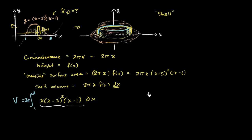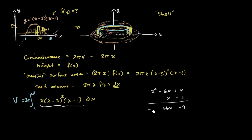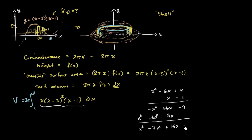So (x - 3)² is x² - 6x + 9. And we're going to multiply that times (x - 1). Negative 1 times 9 is -9; negative 1 times -6x is +6x; negative 1 times x² is -x². Then x times 9 is 9x; x times -6x is -6x²; and x times x² is x³. So we get x³ - 7x² + 15x - 9.